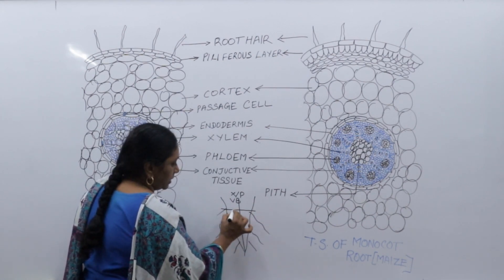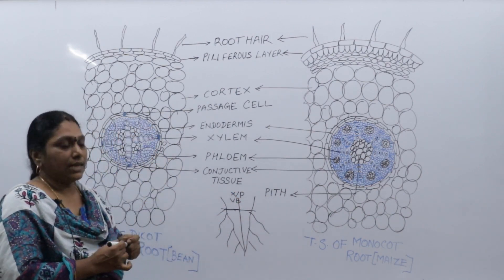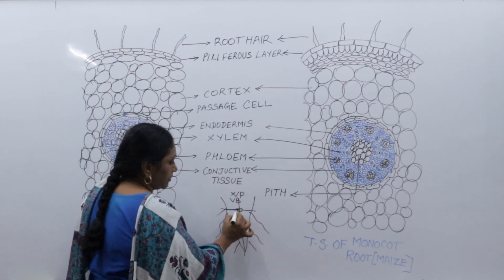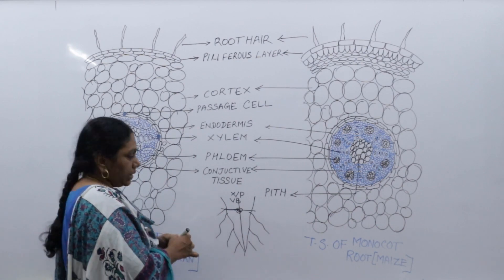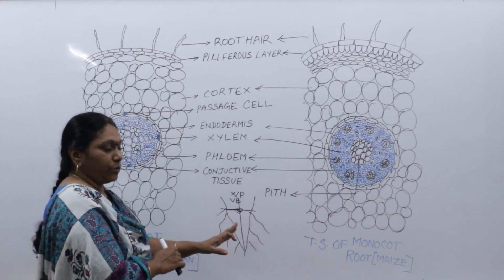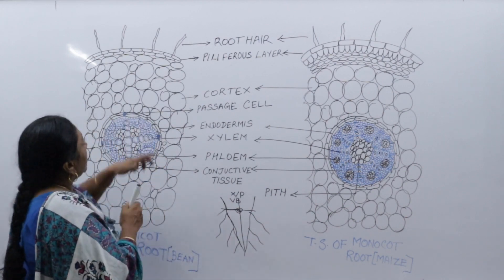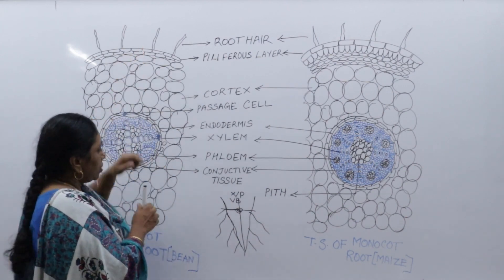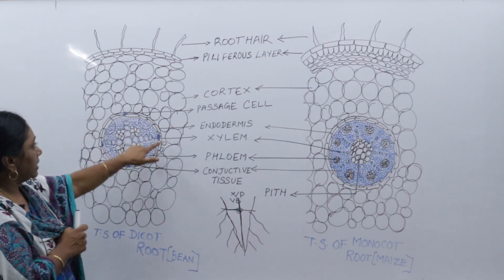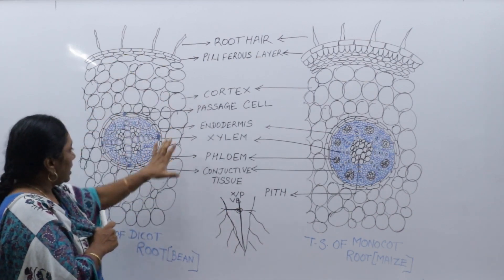In the root, if you cut it transversely, stain it, and view it, these cells become visible. The vascular bundles — that is xylem and phloem — are arranged in the form of a circle in the center of the root. We will now enlarge that portion to see the detail clearly.